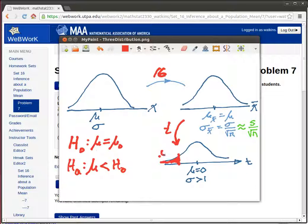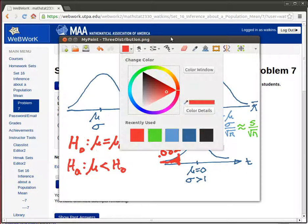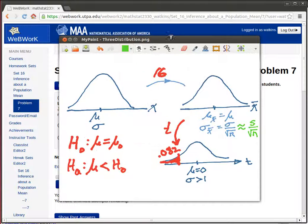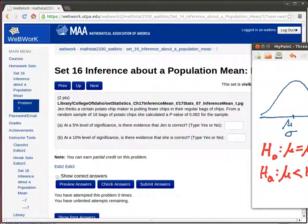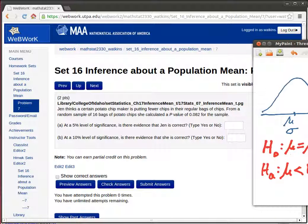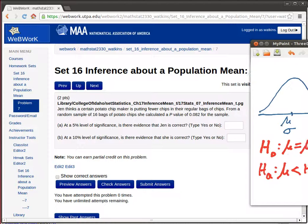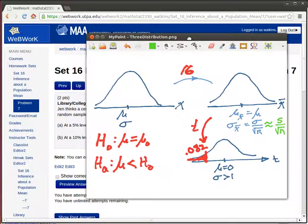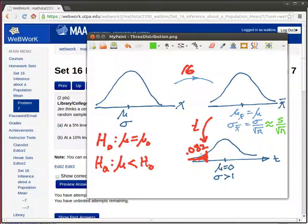Associated with that t-value there's a p-value, which is that area below here, is 0.082, so she finds that p-value. The question is, at a five percent confidence level, is there evidence that Jen is correct?